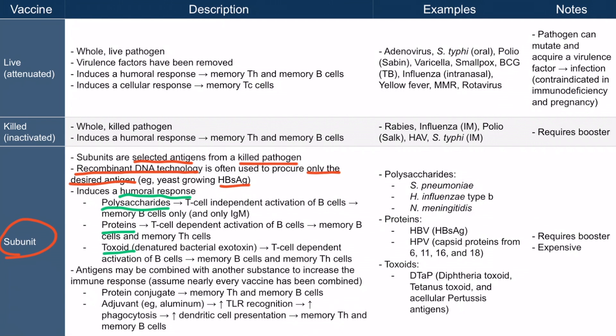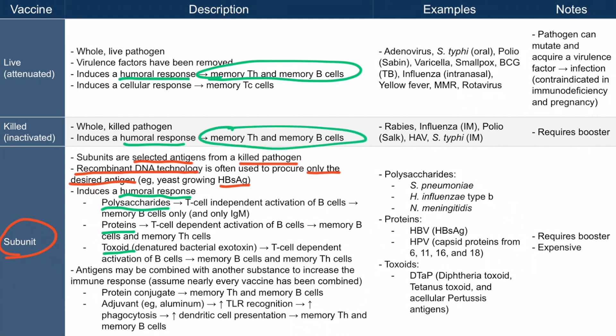Some antigens will not form memory helper T cells — for example, polysaccharides. That's because polysaccharides induce a T cell independent activation of B cells, causing formation of memory B cells only. The only antibodies that can be secreted this way are the IgM class.